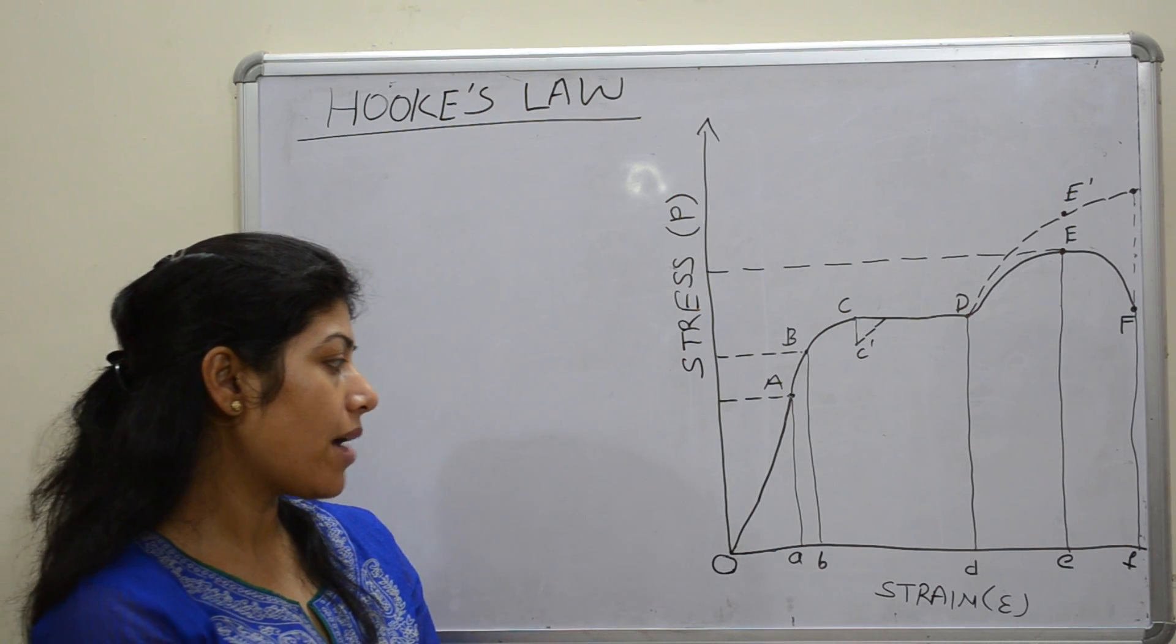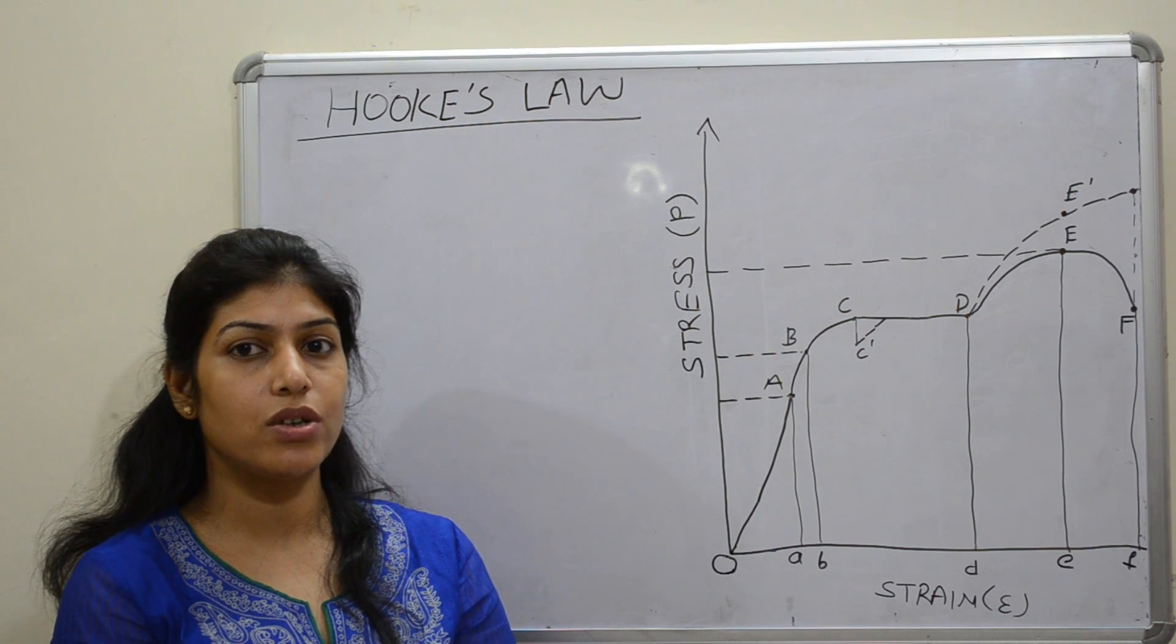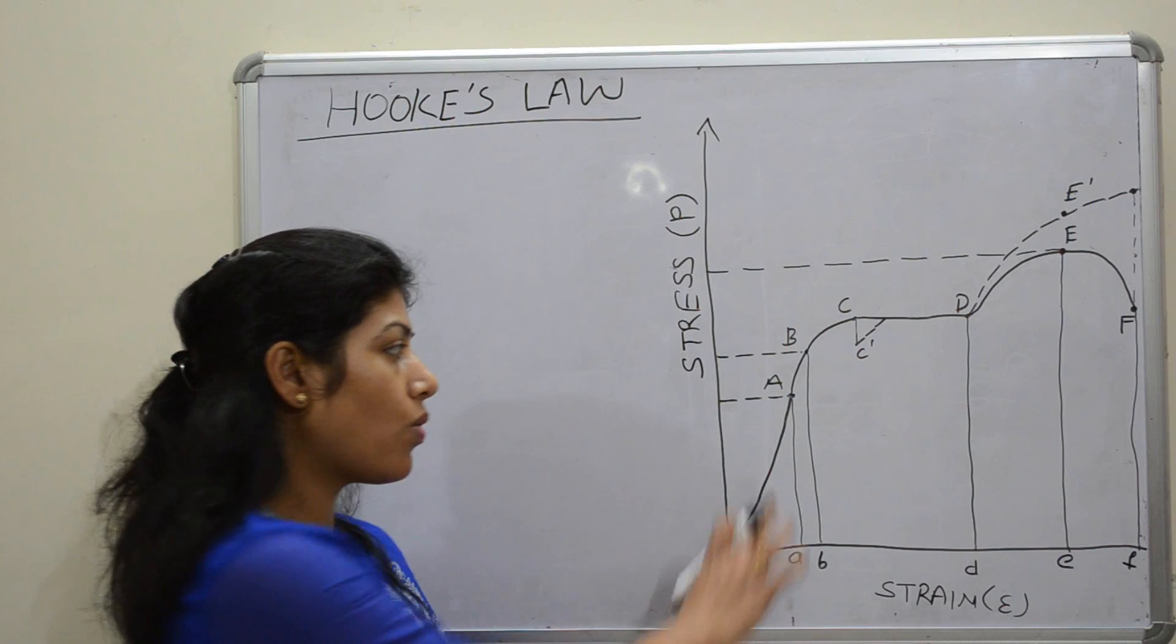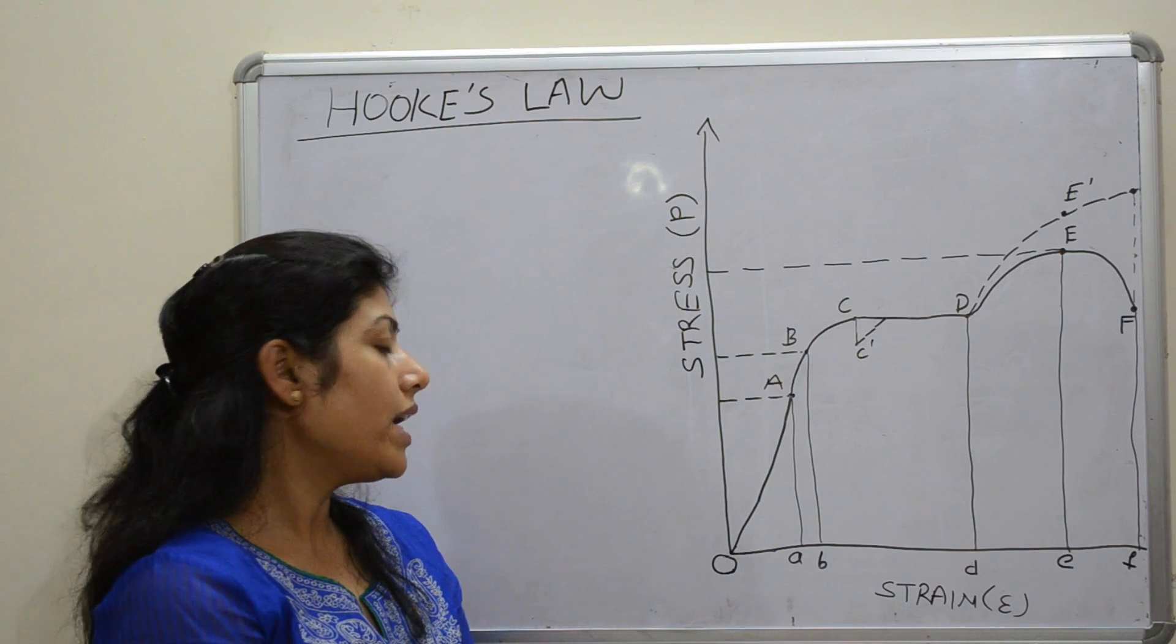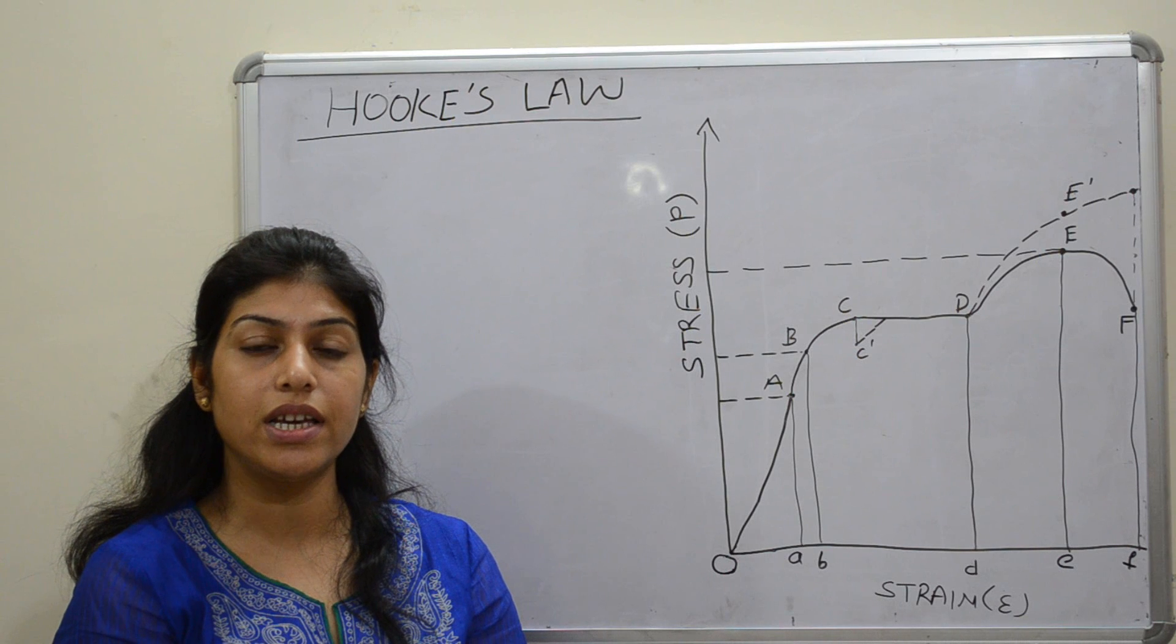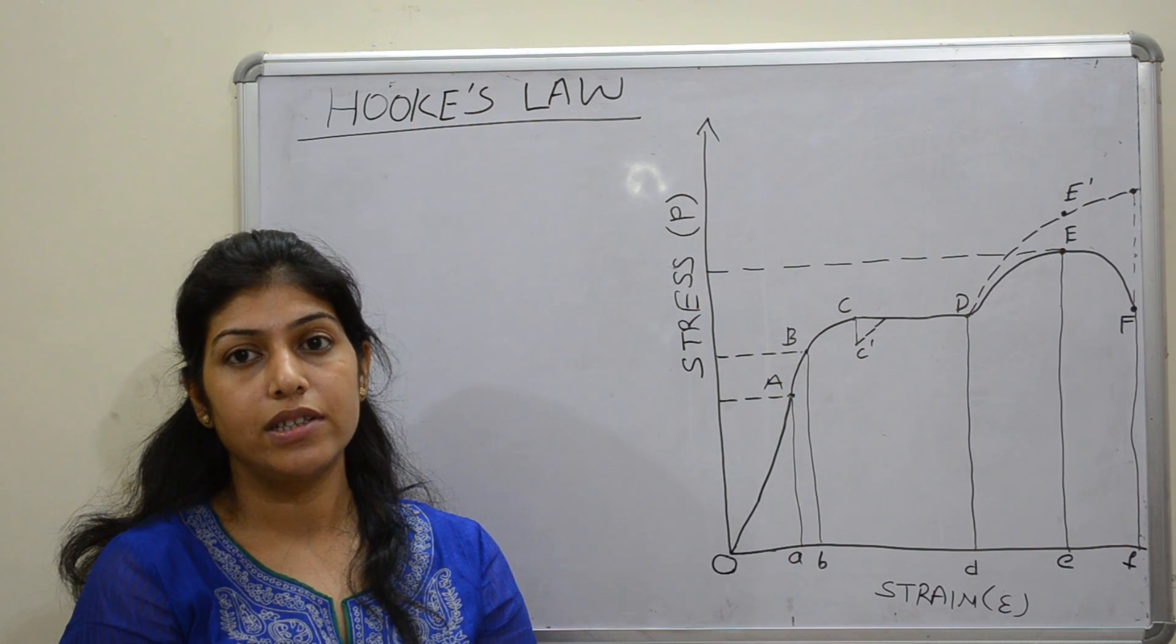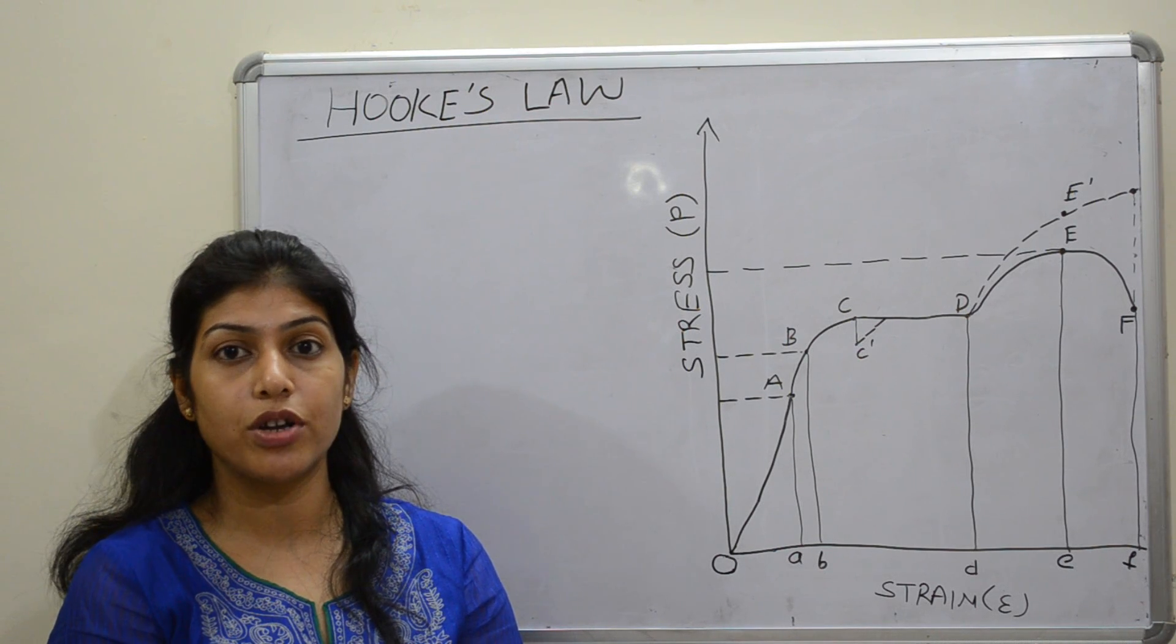In this diagram you can observe the initial position is OA where the curve starts from point O. OA is denoting a straight line, and the slope of this straight line OA is generally the ratio of stress to strain. The material behaves elastically in the range of OA and the slope of this line OA is constant in this particular range.